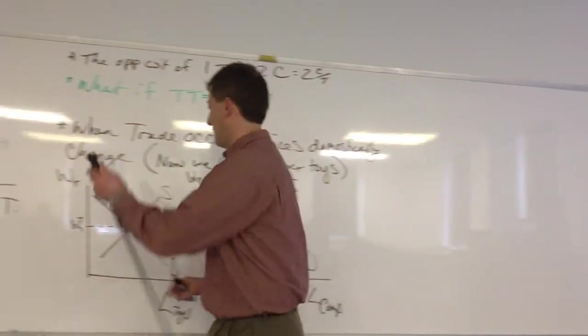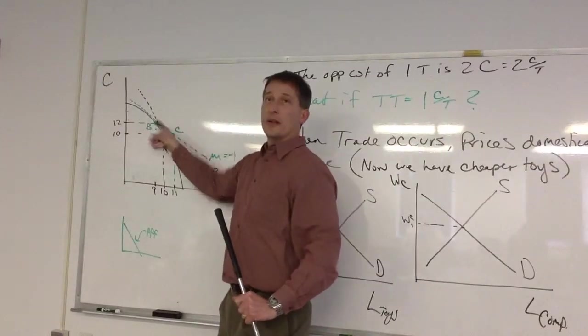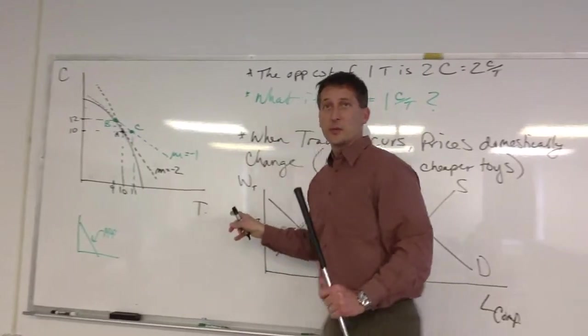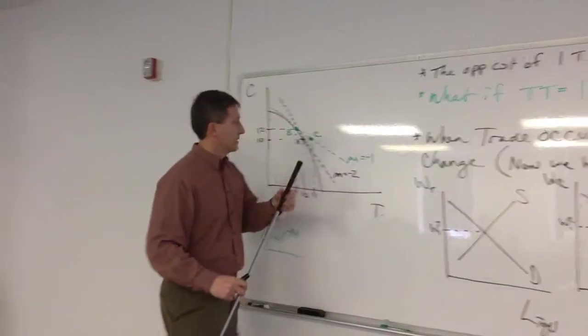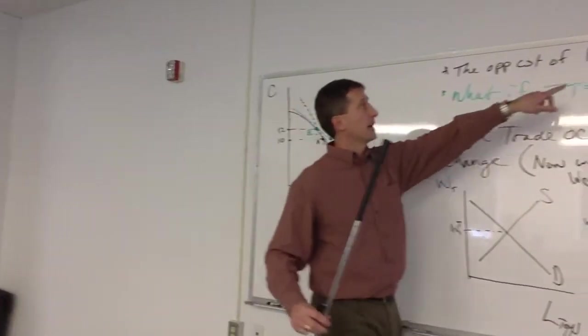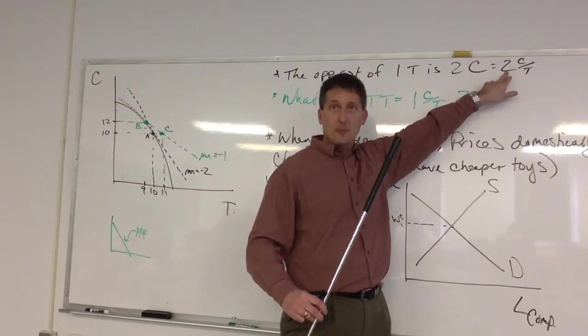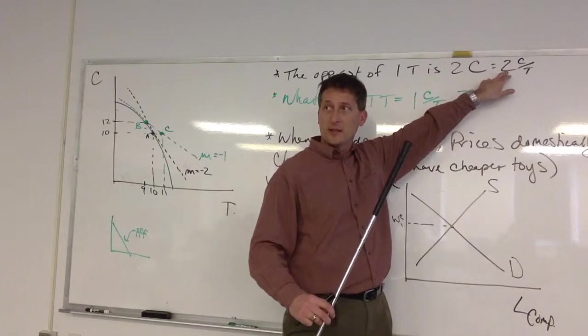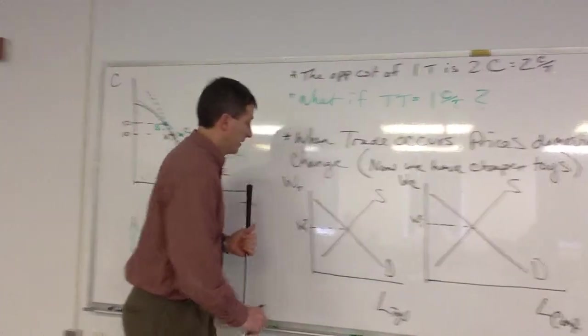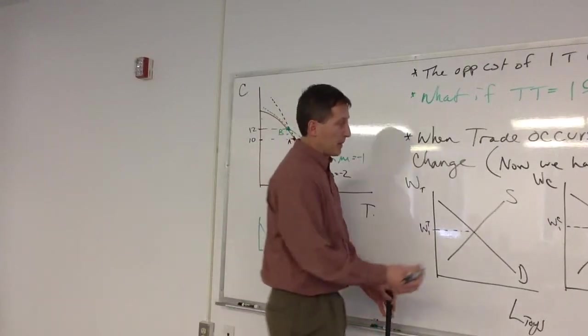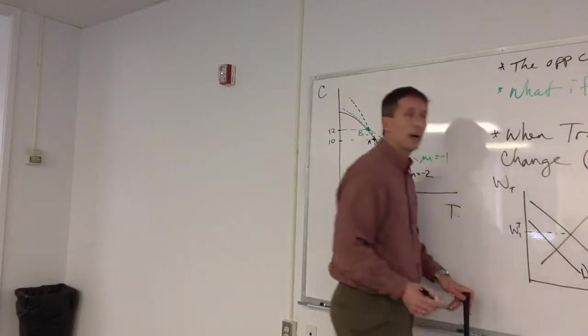So demand is starting to fall here. The demand for labor because we're shifting into computer production rather than doing toy production. That's one way to think about it. And so the world price of computers is falling. Or of toys rather. We used to have high priced toys. Now we've opened up to world trade. Prices are falling. And so we don't need as many people. So the demand curve is shifting. So let's call it D1.